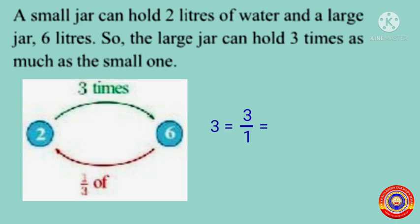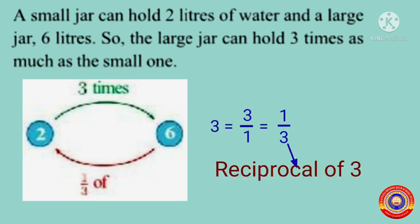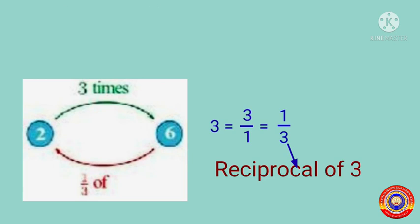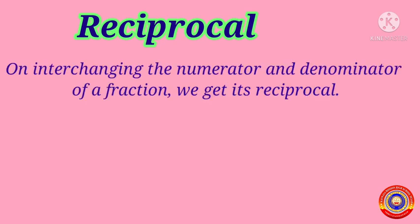On turning the fraction three-by-one upside down, we get one-by-three. This one-by-three is called the reciprocal of three. Now, what is a reciprocal? On interchanging the numerator and denominator of a fraction, we get its reciprocal. For example, five when written as a fraction is equal to five-by-one. On interchanging its numerator and denominator, we get the reciprocal as one-by-five.